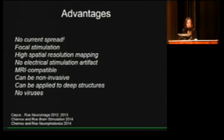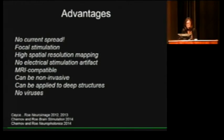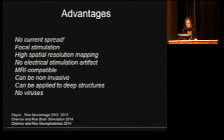The advantages of this method are: unlike electrical current stimulation, there is no current spread. If you apply light with a 200-micron fiber, you get a 200-micron spot, so you can feasibly activate a single cortical column — achieving high spatial resolution connectivity mapping. Furthermore, if you want to do electrical recording during stimulation, you don't get electrical stimulation artifacts. Using light in the MR is very easy, so it's MRI compatible and can be relatively noninvasive. You can apply it to an implanted window, or insert fiber optics deep into structures similar to DBS. Importantly, unlike optogenetics, it requires no viruses, making it potentially more applicable for human clinical use.